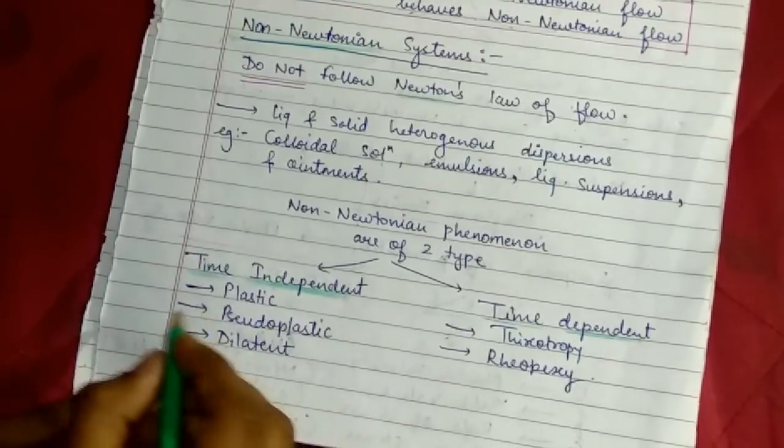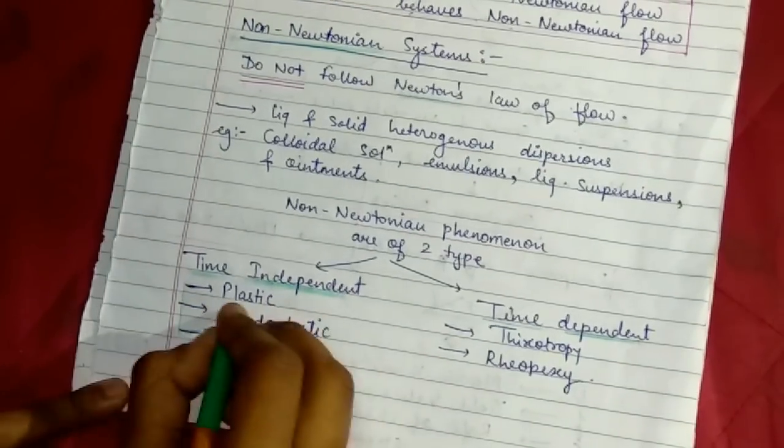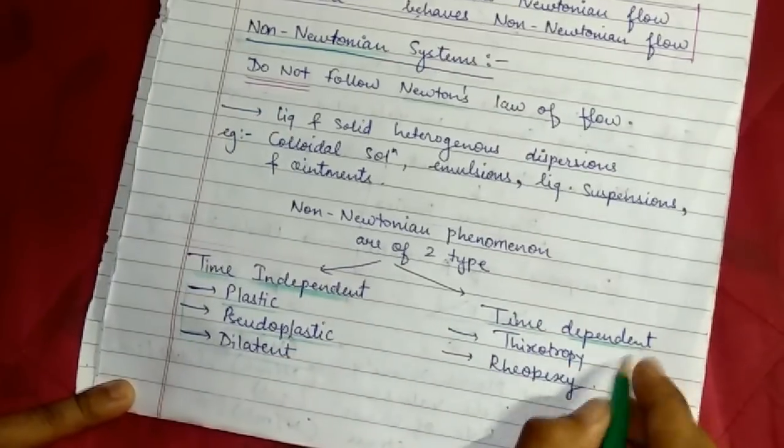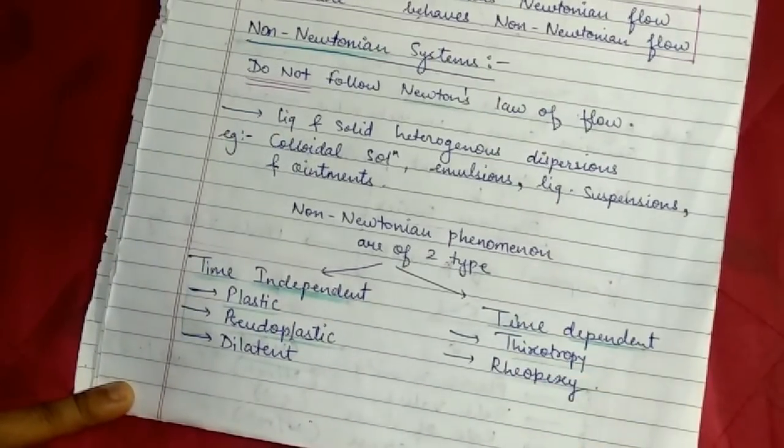In time-independent, there are three types: plastic, pseudoplastic, and dilatant. In time-dependent, there are two types: thixotropy and rheopexy. Non-Newtonian materials are analyzed in rotational viscometer.